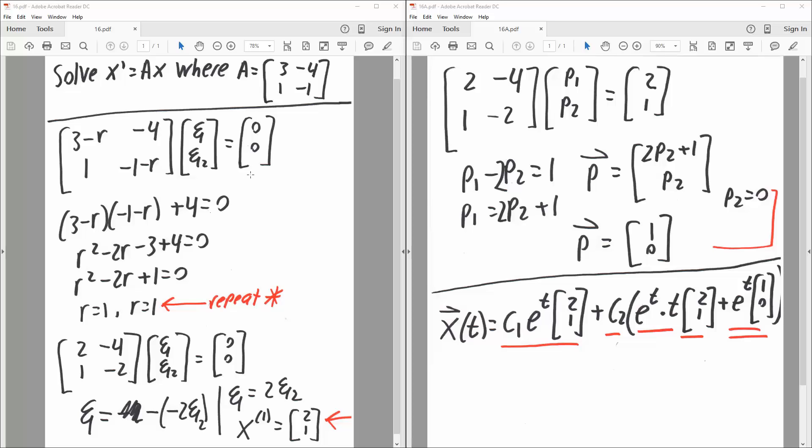So next we can say negative r times negative r, r squared, then minus r times 3, so negative 3r. Then plus negative r times negative 1, so plus r, so minus 2r.